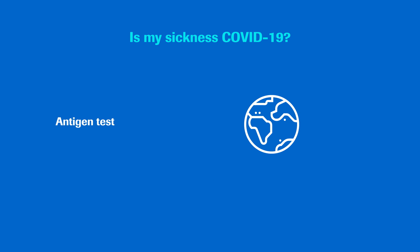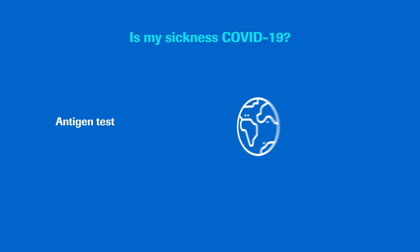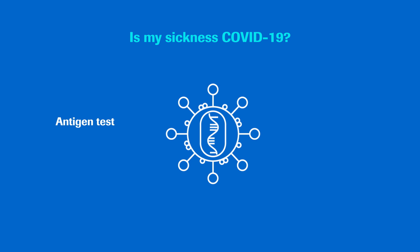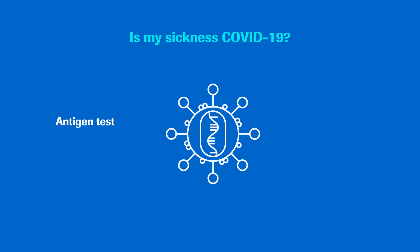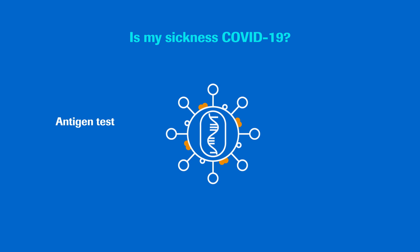An antigen test can also be used to identify patients currently infected with SARS-CoV-2. This is done by examining whether viral proteins are present in the throat or nasal fluid. These tests can detect four main coronavirus proteins: the spike protein, which we have already introduced; the membrane protein; an envelope protein; and the fourth is a nucleocapsid in which the RNA is embedded.